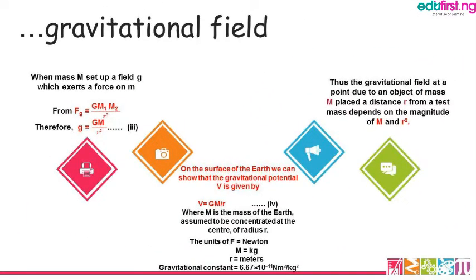When a mass sets up a field g which exerts a force on M, we have F equals GM1M2 divided by R squared. This now gives us g equals GM over R squared — equation three. The M in this case becomes the product of the two masses simplified.